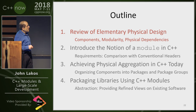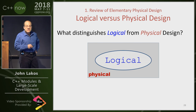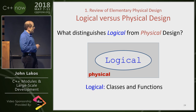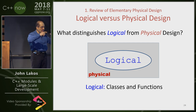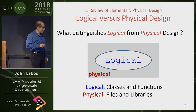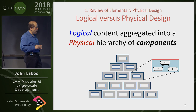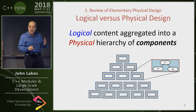Now for the review of elementary physical design. This is my age-old style — it goes back to before the turn of the century. We have physical and logical entities: physical things are in square entities, logical things are in round entities. Logical classes and functions, physical files and libraries. We can stack up components like Lego blocks — each block internally has different logical content, but macroscopically they all look the same physically. That's what we want for modules: a container for logical content.